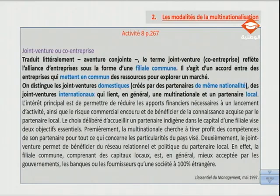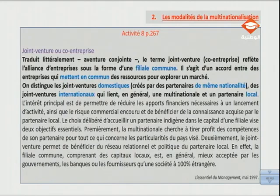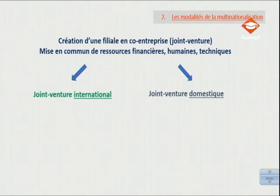On va s'appuyer sur l'activité 8, page 267 de notre manuel, intitulé « joint-venture » ou « co-entreprise ». Traduit littéralement « aventure conjointe », le terme « joint-venture » ou « co-entreprise » reflète l'alliance d'entreprises sous la forme d'une filiale commune. Il s'agit d'un accord entre des entreprises qui mettent en commun des ressources pour explorer un marché. On distingue les joint-ventures domestiques, créées par des partenaires de même nationalité, des joint-ventures internationaux qui lient en général une multinationale et un partenaire local.